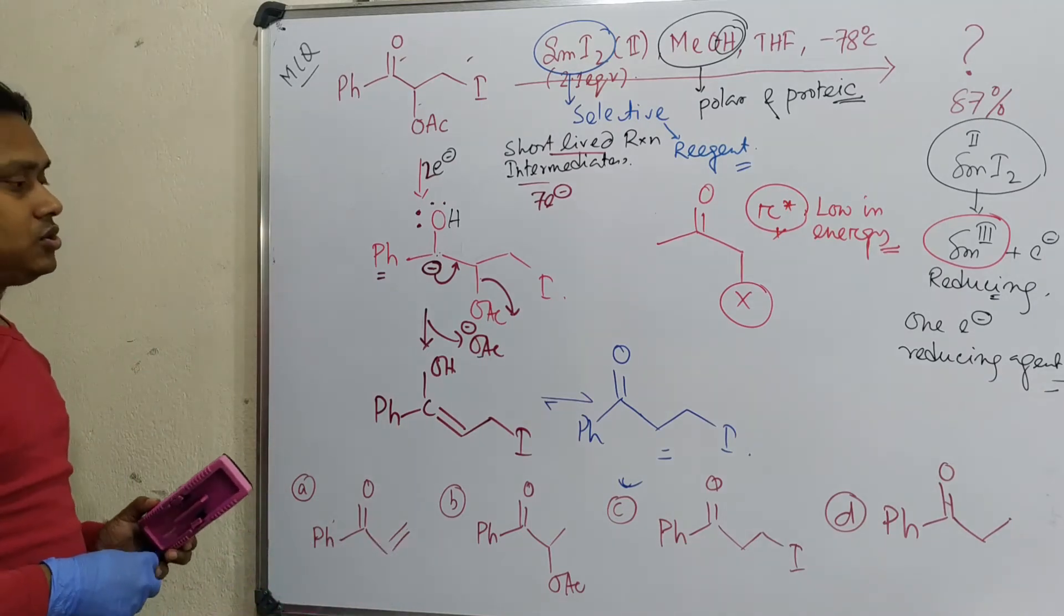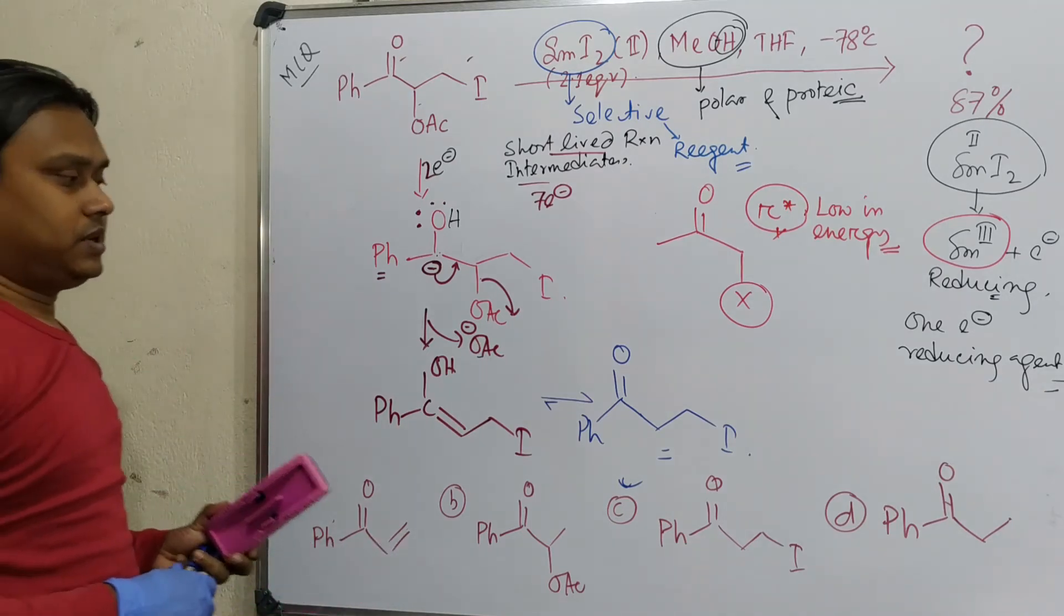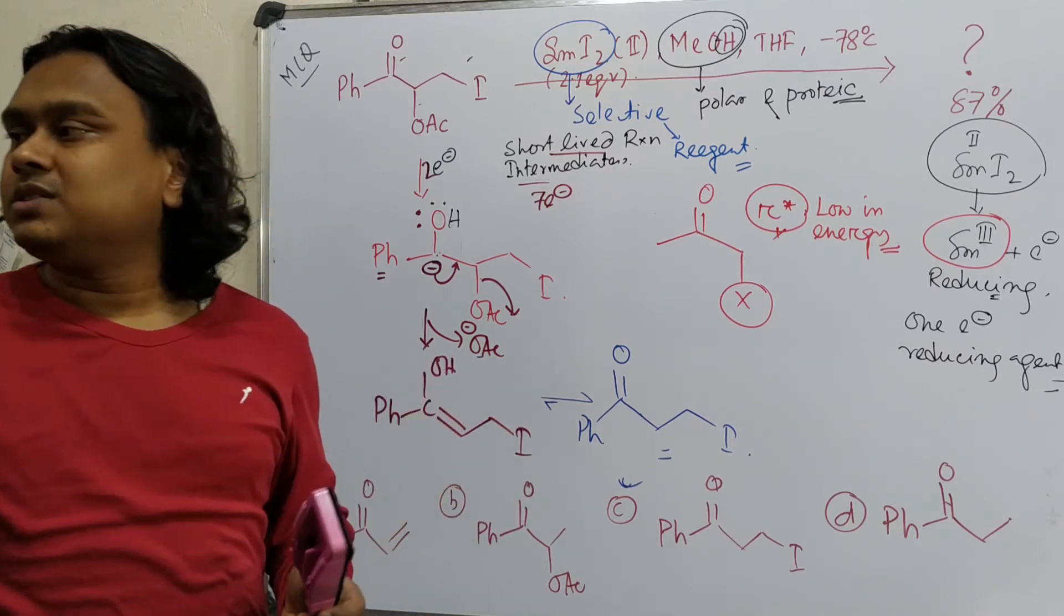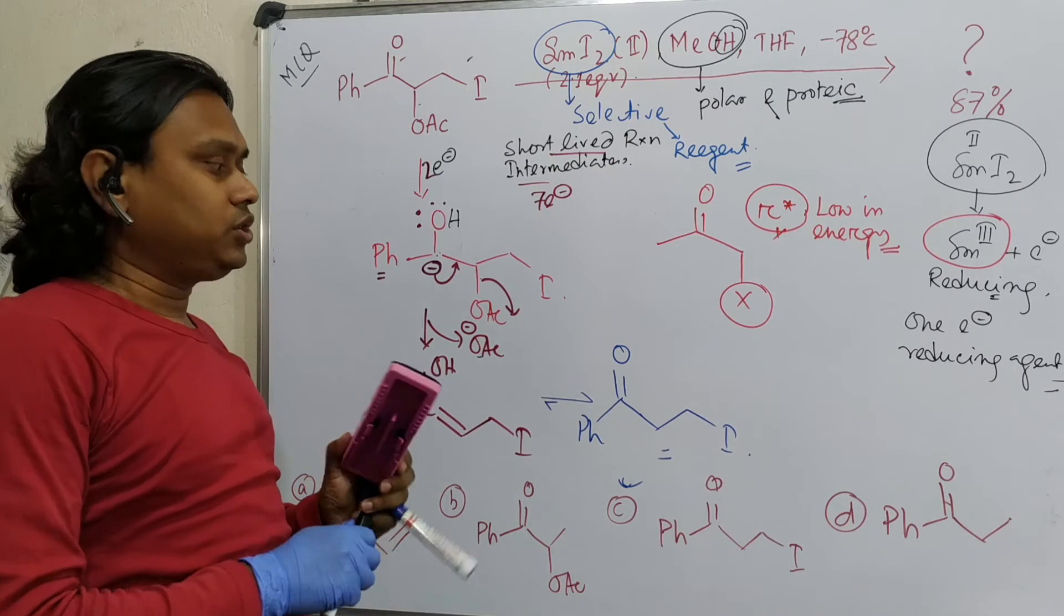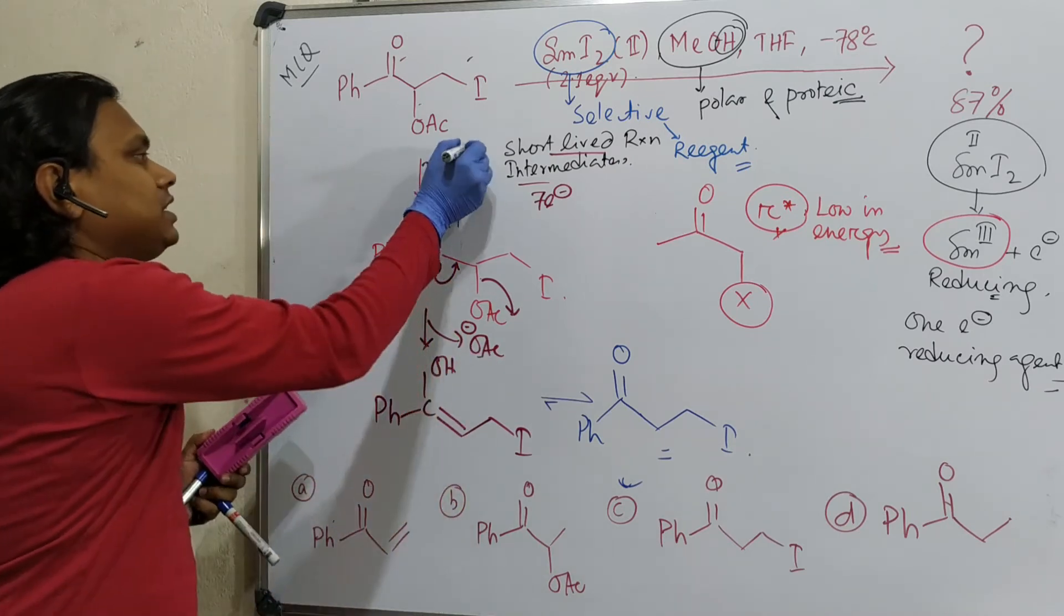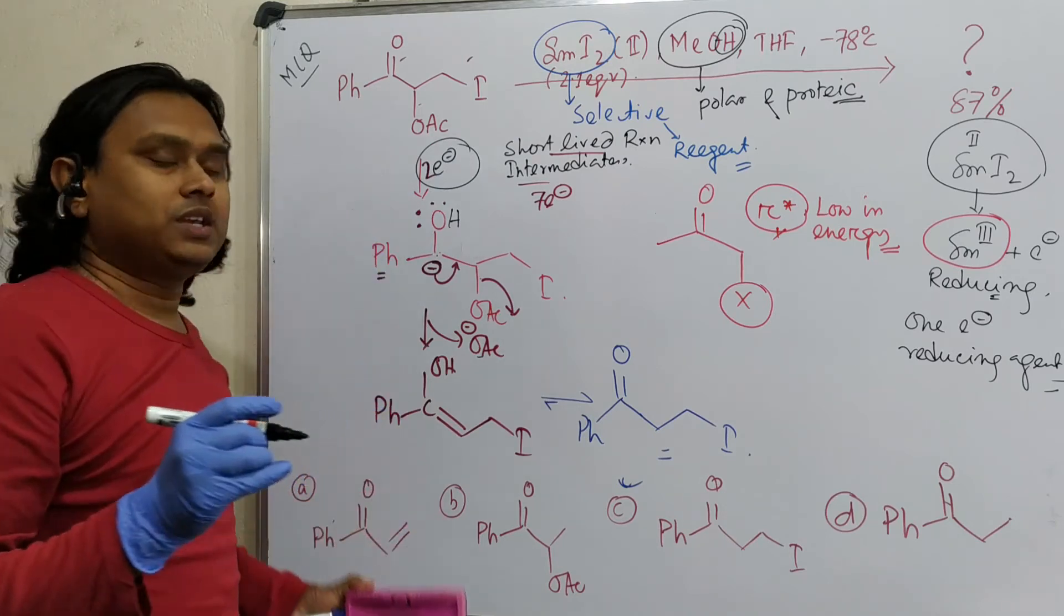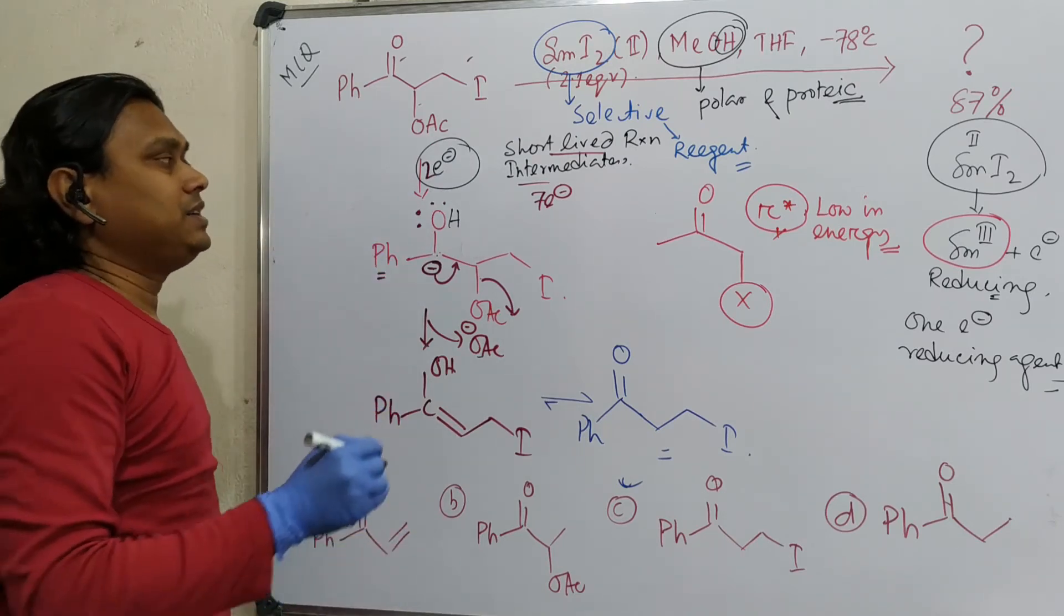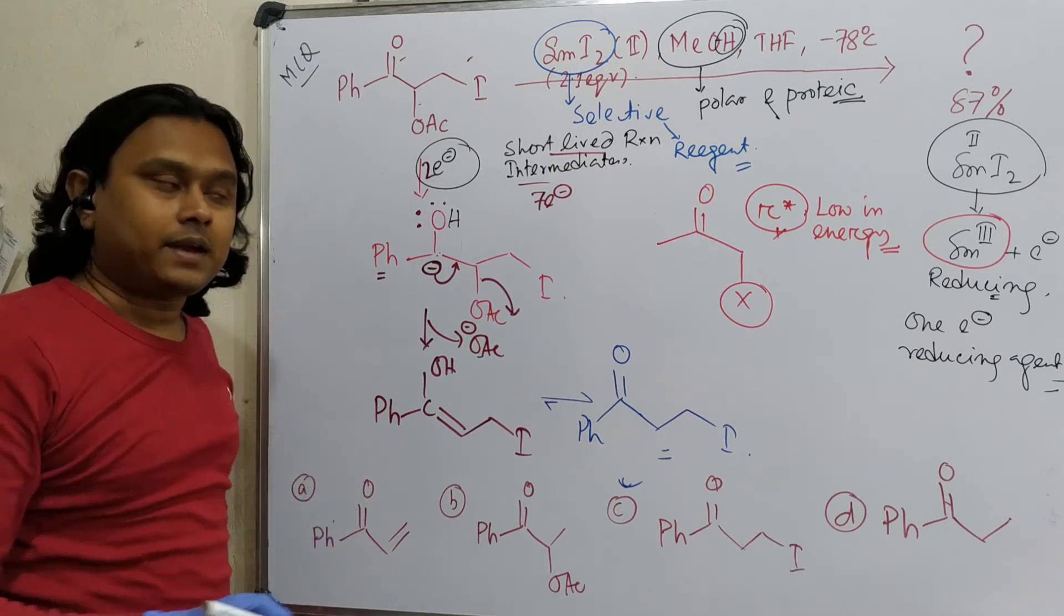Now, as I asked the second question, if excess equivalents means, if two equivalents, four equivalents, this is 2.1 slight excess because, see, here two electrons needed. But in this case, if four equivalents, but in this case, if four equivalents of samarium iodide is employed, what is the product? Actually, then, this also gets reduced.